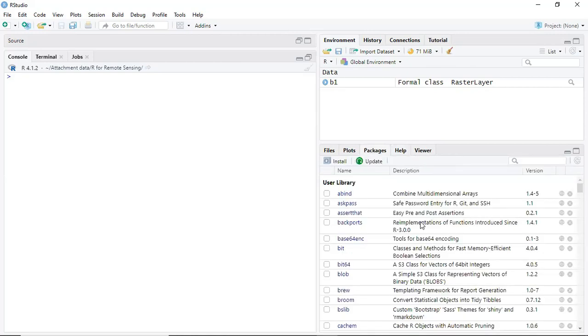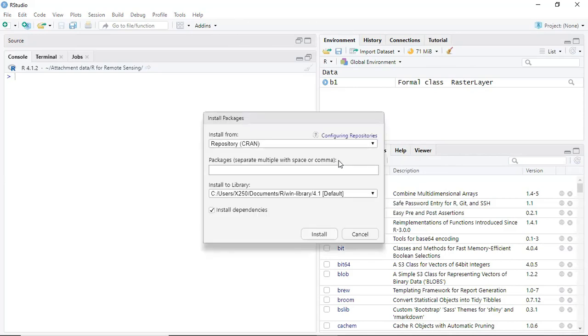You can install packages here. If you have R Studio, you can install by clicking this, and then you input your package name there. You input Raster there and then you can install.